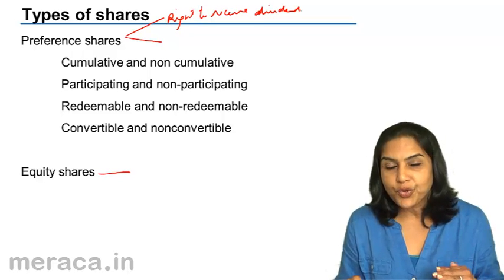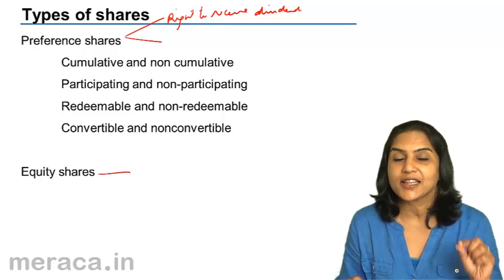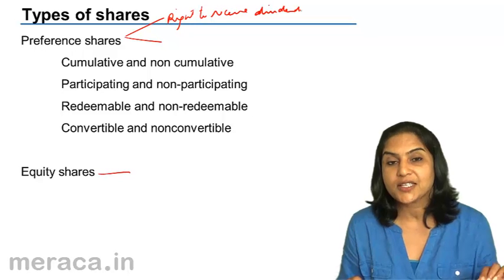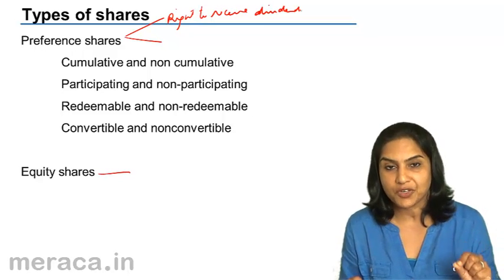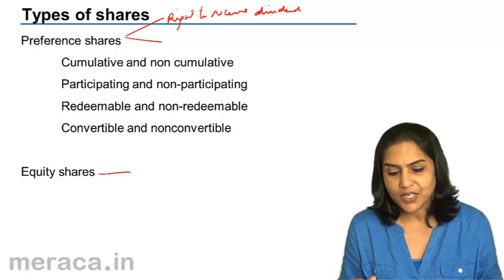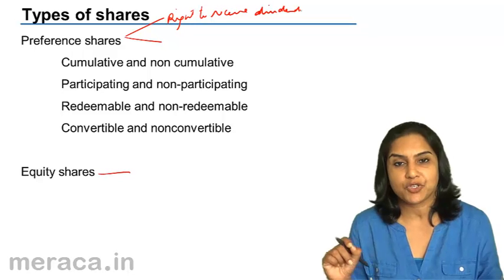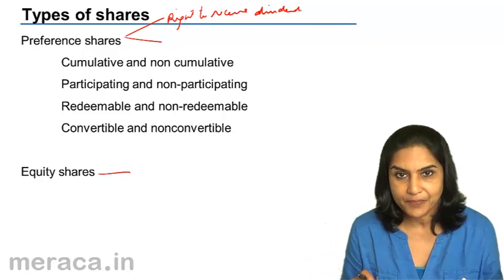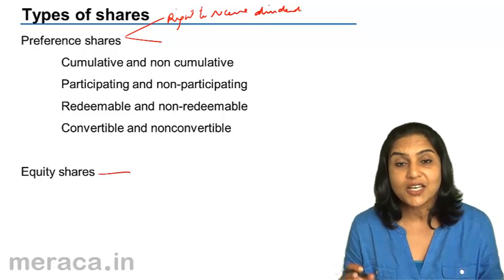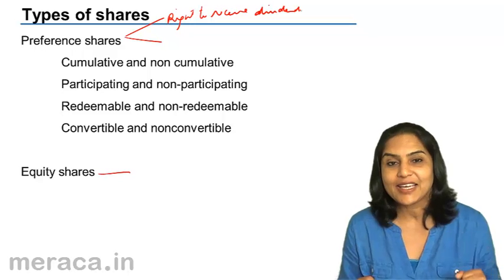We have two kinds of shares: equity shares and preference shares. Preference shareholders have a preferential right — they receive dividend first before the equity shareholders. Preference shares have a preferential right with respect to the receipt of dividend. They are entitled to dividend first, and only after they are paid dividend do the equity shareholders get dividend. Usually, preference shares have a fixed rate of dividend. A 9% preference share means they get 9% of the face value of the preference share as dividend. Once the preference share dividend is paid, if there are adequate profits, these may be distributed to equity shareholders.